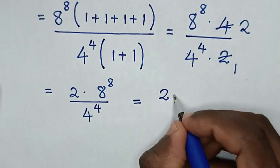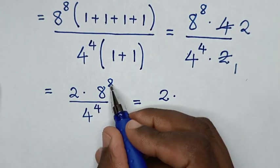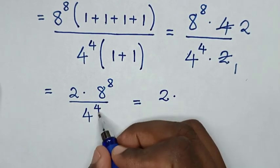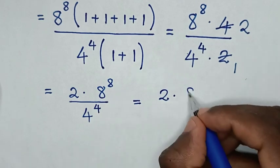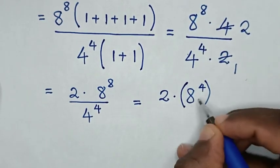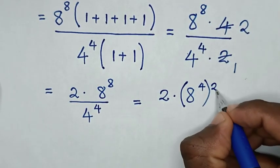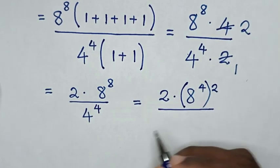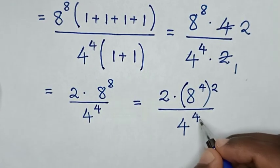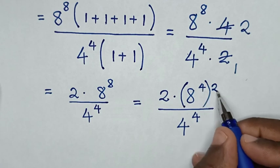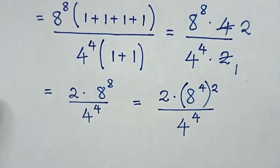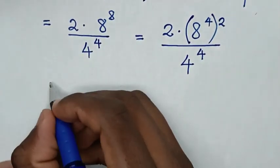Then times: from the exponent, 8 power 8 can be written as 8 power 4 in bracket, raised to the power of 2. So we have 8 power 4, bracket, power of 2, over 4 power 4, because 4 times 2 gives the power of 8.